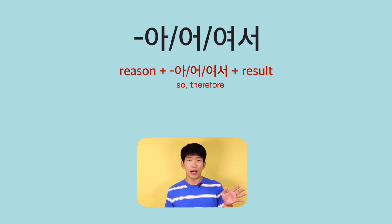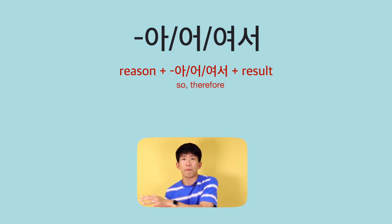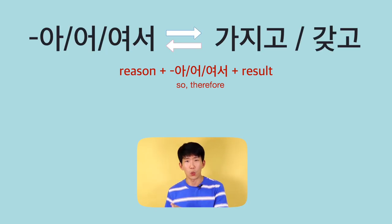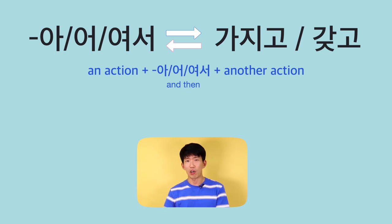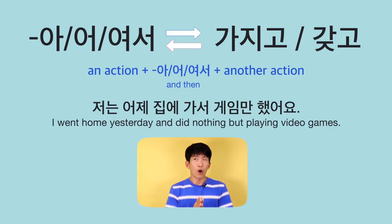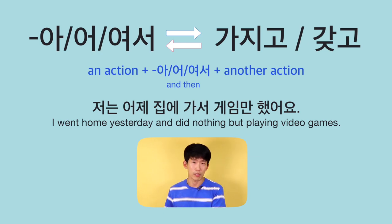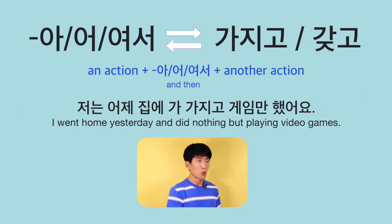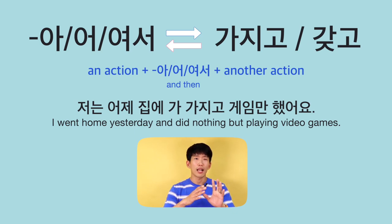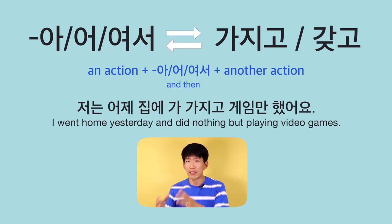Summary: You can say 아서, 어서, 여서 to mean 'A, therefore B,' but you can replace it with 가지고, or 갖고 — though I recommend you avoid using 갖고. You can talk about one action and then say 서, and then talk about a sequential action that follows. For example, 저는 어제 집에 가서 게임만 했어요 — 'I went home yesterday and did nothing but play video games' — can become 어제 집에 가 가지고 게임만 했어요, but this makes the sentence much more casual. That's why you keep hearing 가지고 and 갖고 used to mean the same thing as 서.